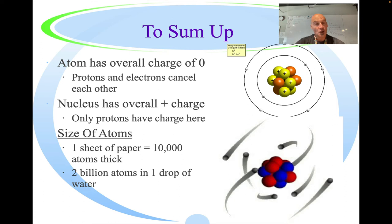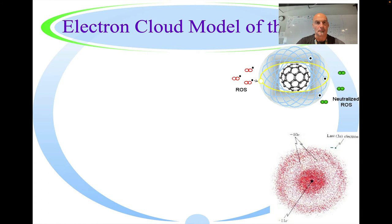So again, when we go over the ion charges, we're going to talk about more like the cations and anions and the overall charge of the atom. But for now, just we're going to go with a neutral charge for each individual atom.